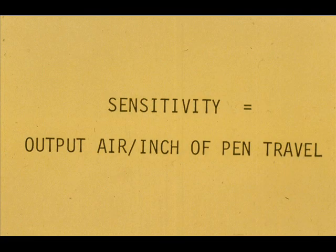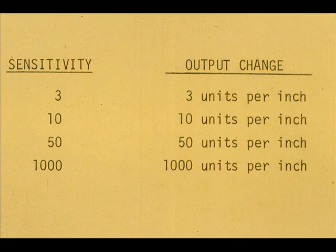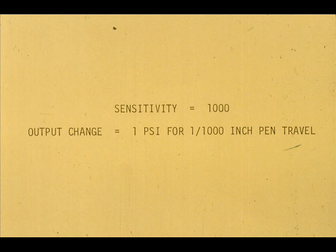Sensitivity equals the output air change per inch of pen or measurement change. A sensitivity setting of three means the output air would change three PSI for each inch of pen travel. If the sensitivity is set at 1,000, the pen only has to travel 1/1000th of an inch to change the output air one pound. For a pneumatic controller, this is practically on-off control.